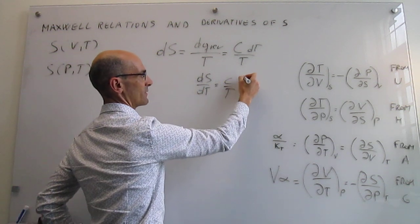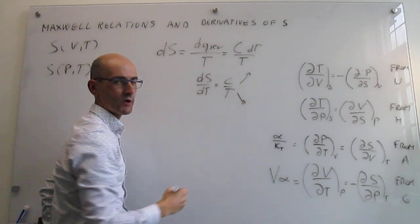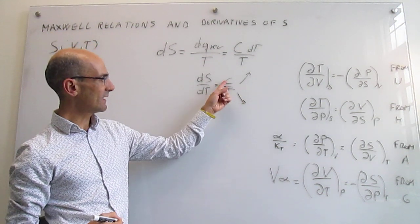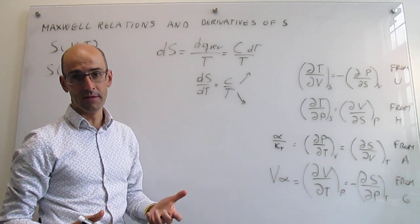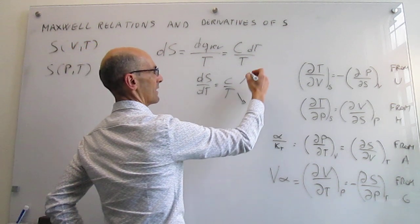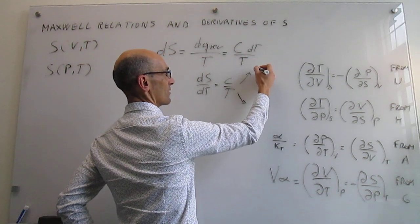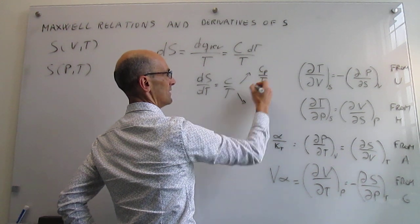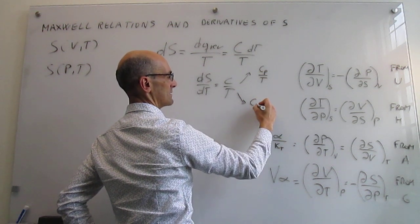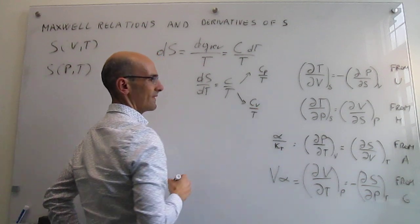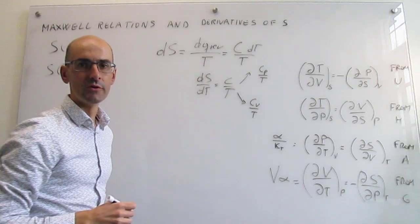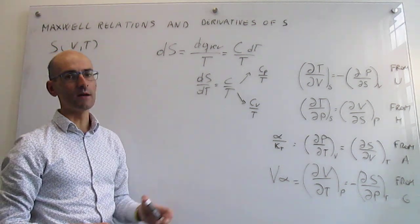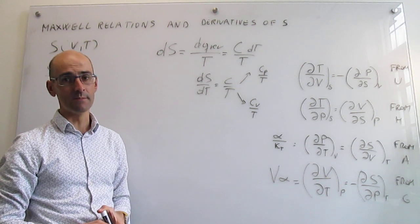This spawns a couple of expressions depending on whether you're working at constant pressure or constant volume, because the heat capacity depends on the path. At constant pressure that would be Cp over T, and at constant volume that would be Cv over T. This tells us how the entropy depends on temperature.